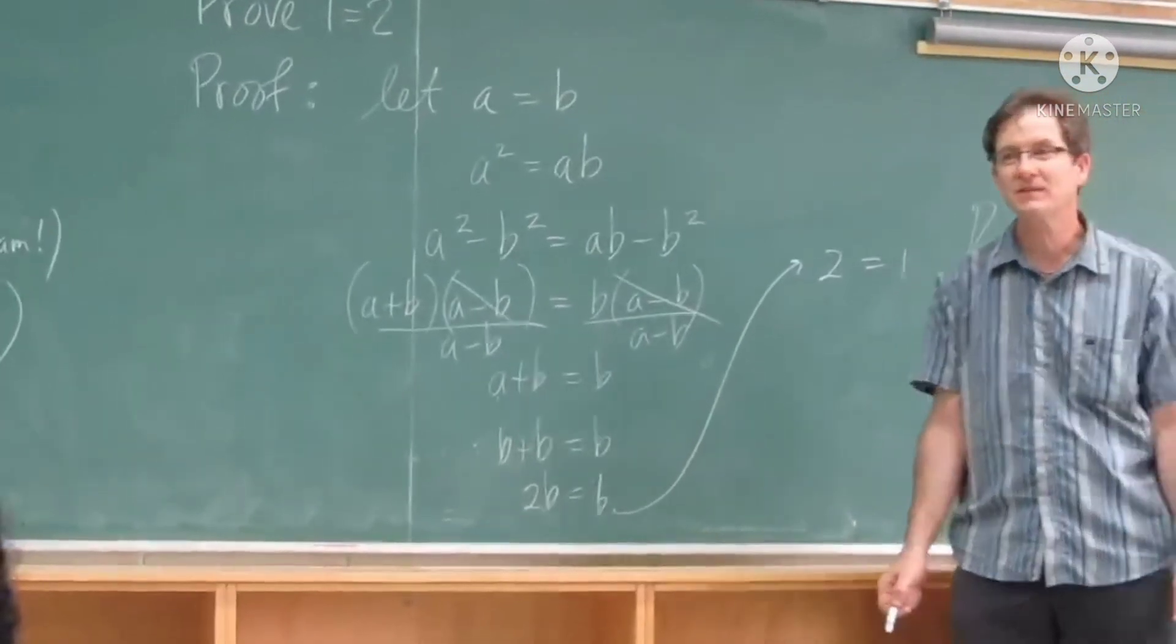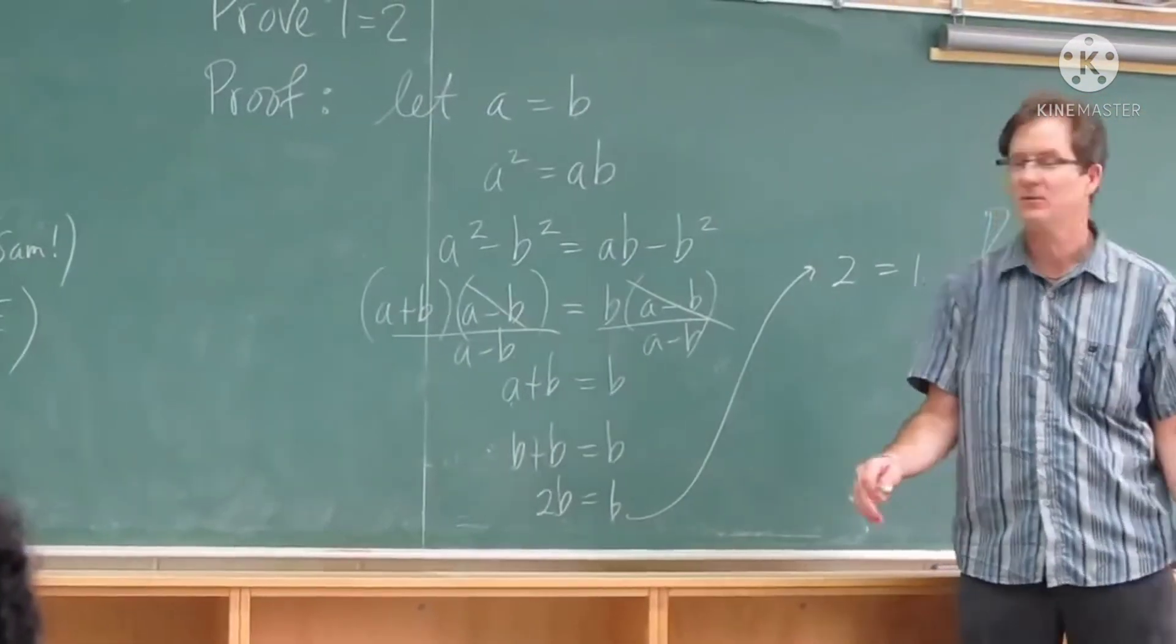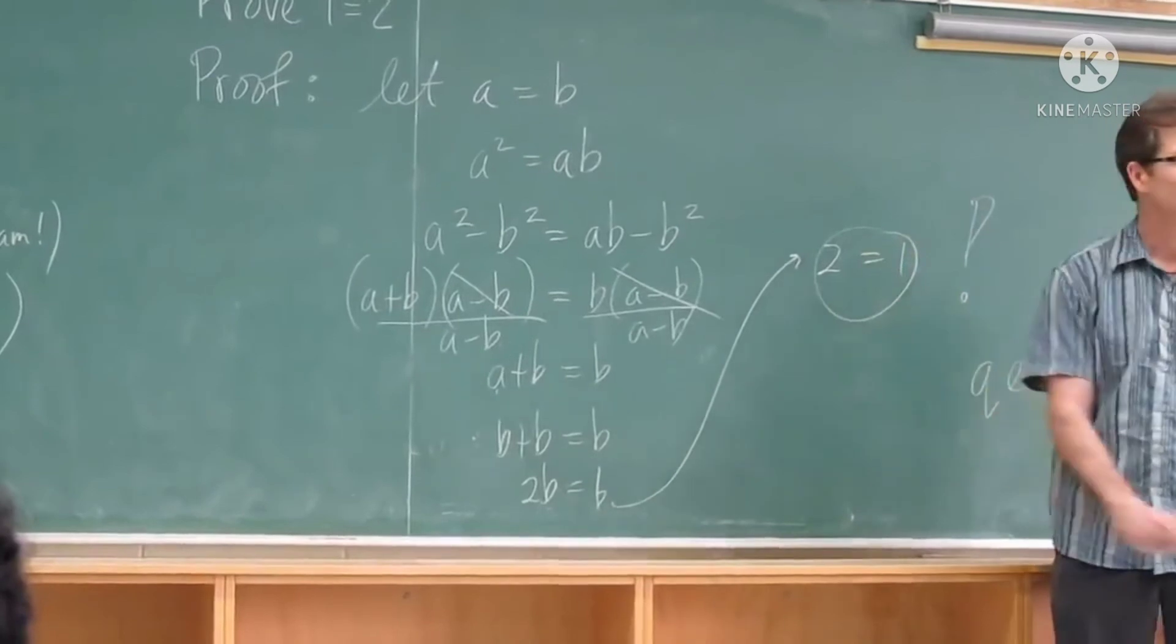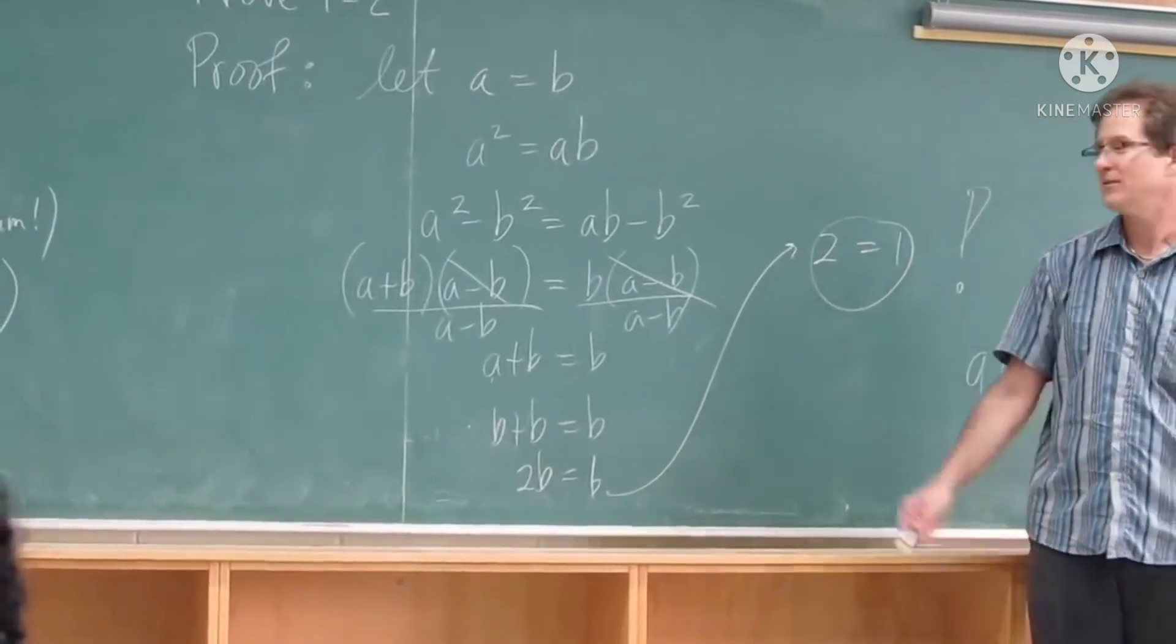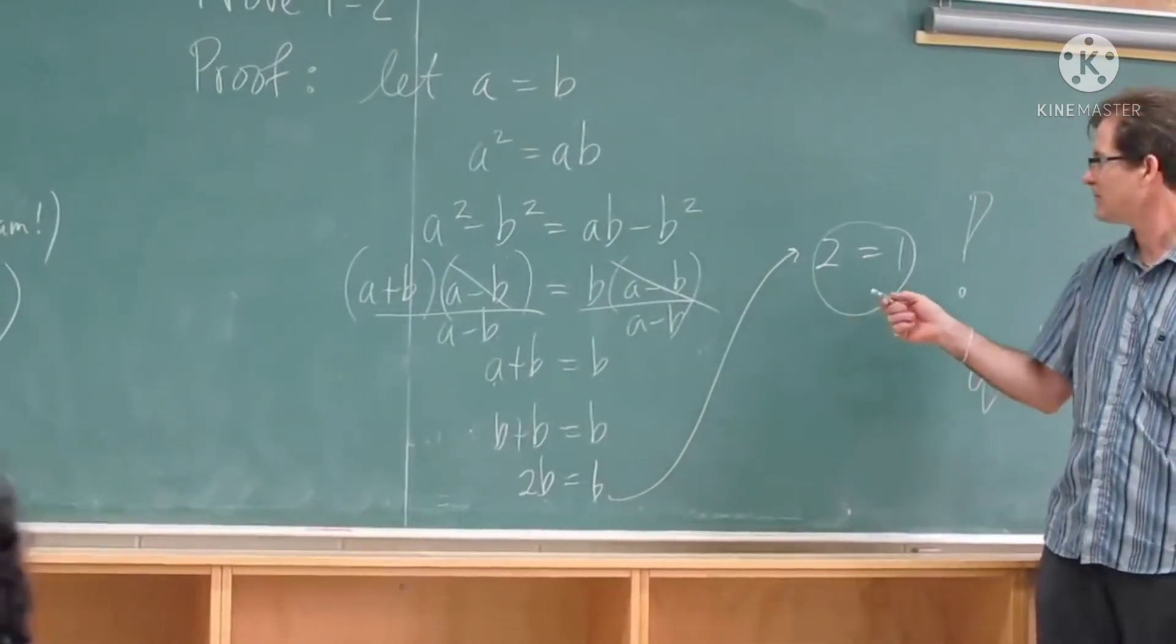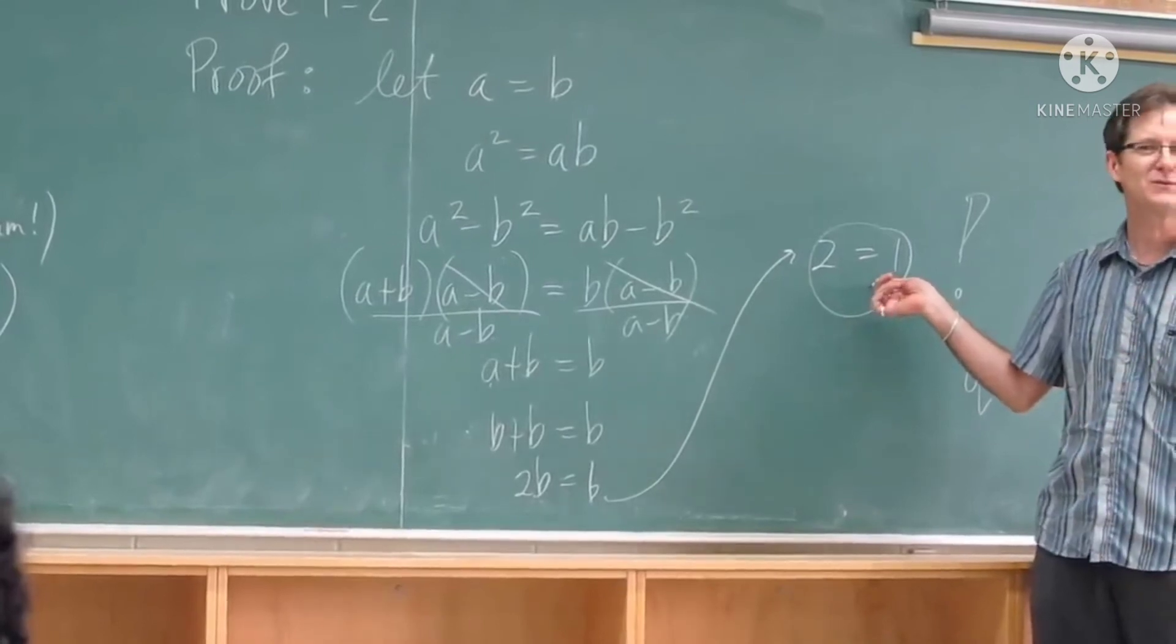When you divide by 0, all sorts of weird things can happen. You can prove all sorts of interesting things when you divide by 0. So, don't divide by 0 or you'll end up proving this, and then nothing in the universe will make sense.